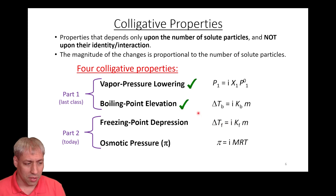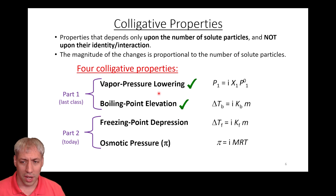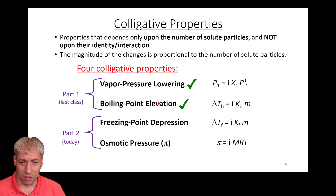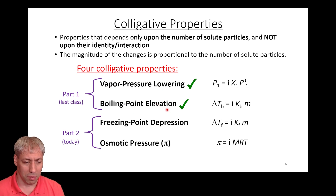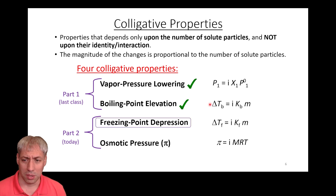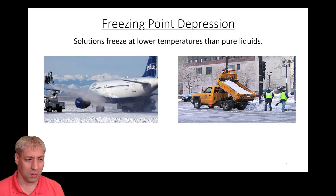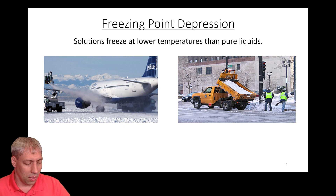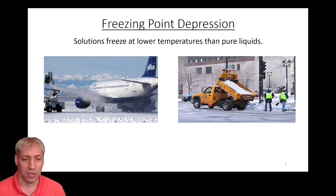Previously we covered vapor pressure lowering and boiling point elevation: the more solute particles you add, the lower the vapor pressure, and consequently the higher the boiling point. Now we're going to talk about freezing point depression, which is conceptually very similar to boiling point elevation but going in the opposite direction. The idea of adding salt or de-icer to airplane wings is an example of freezing point depression.